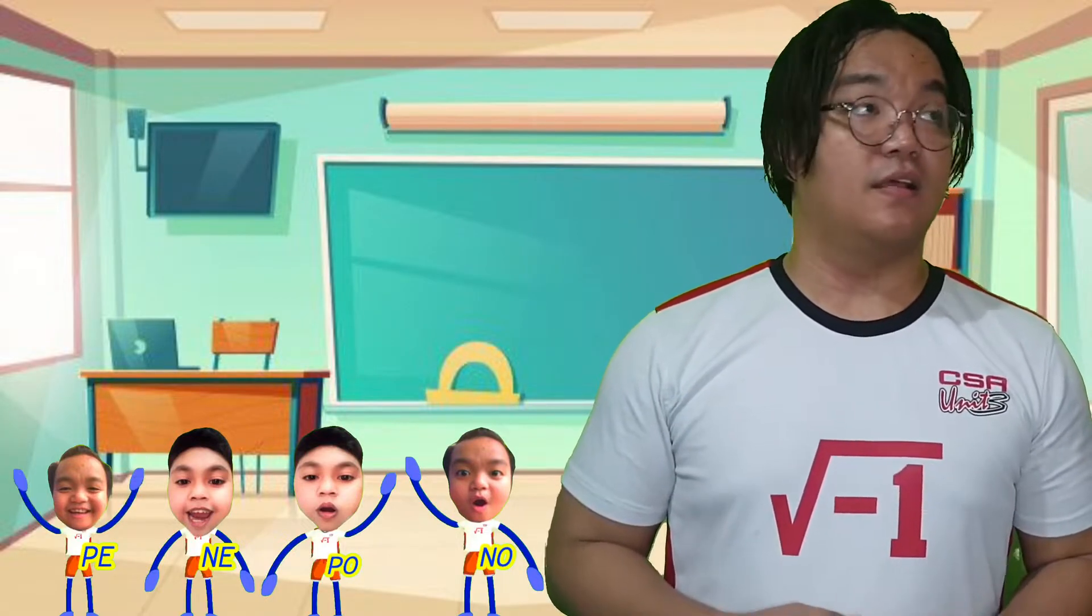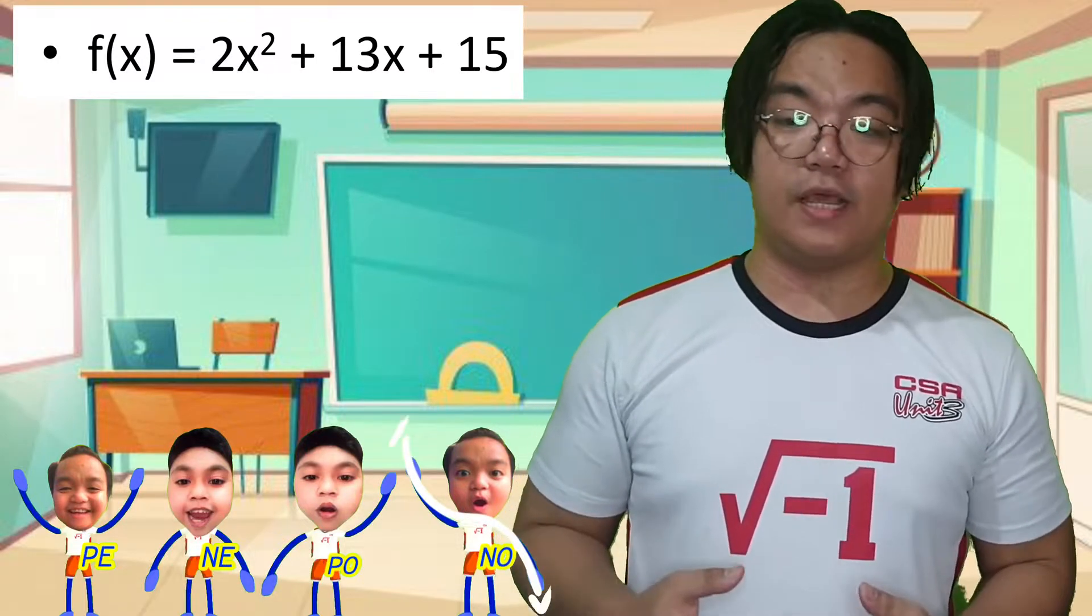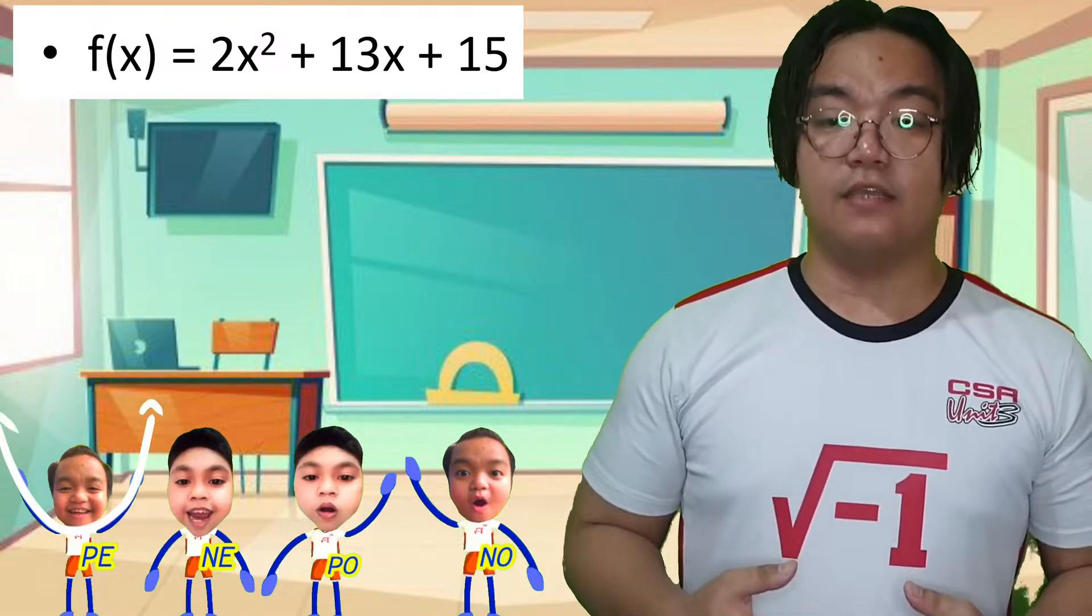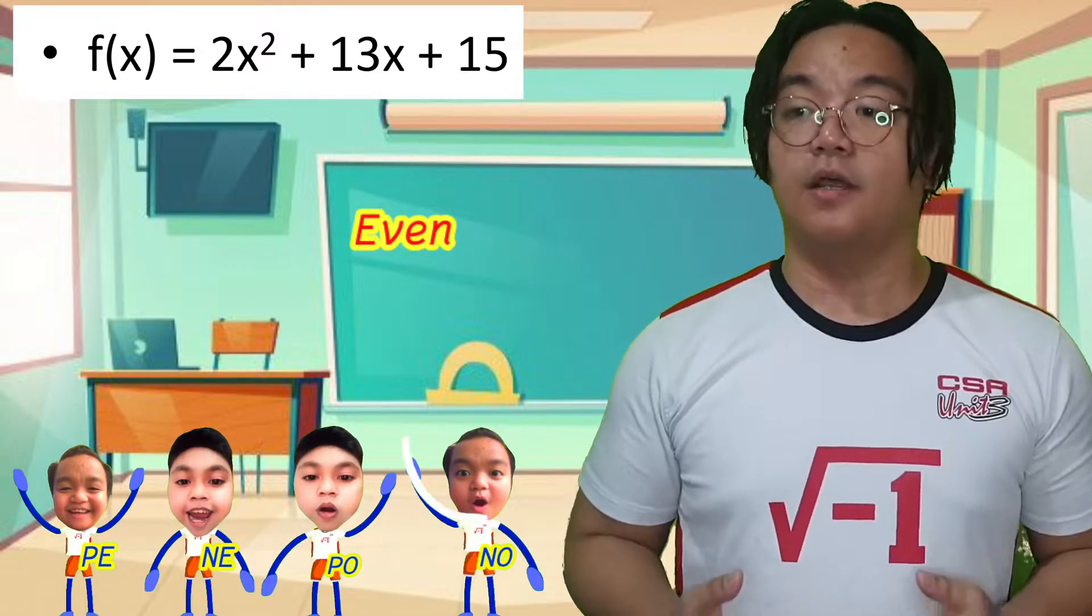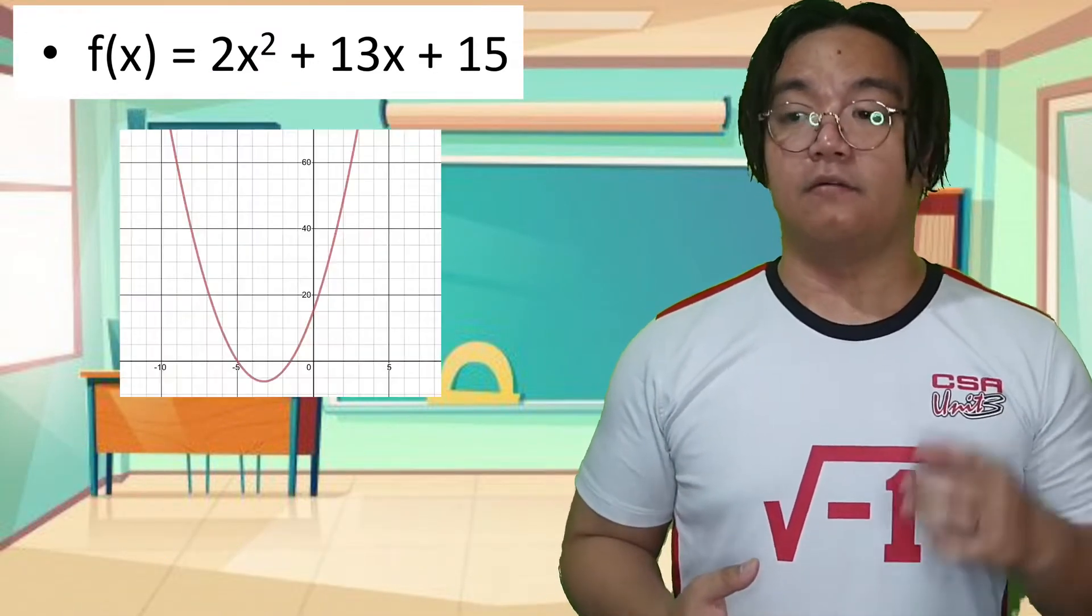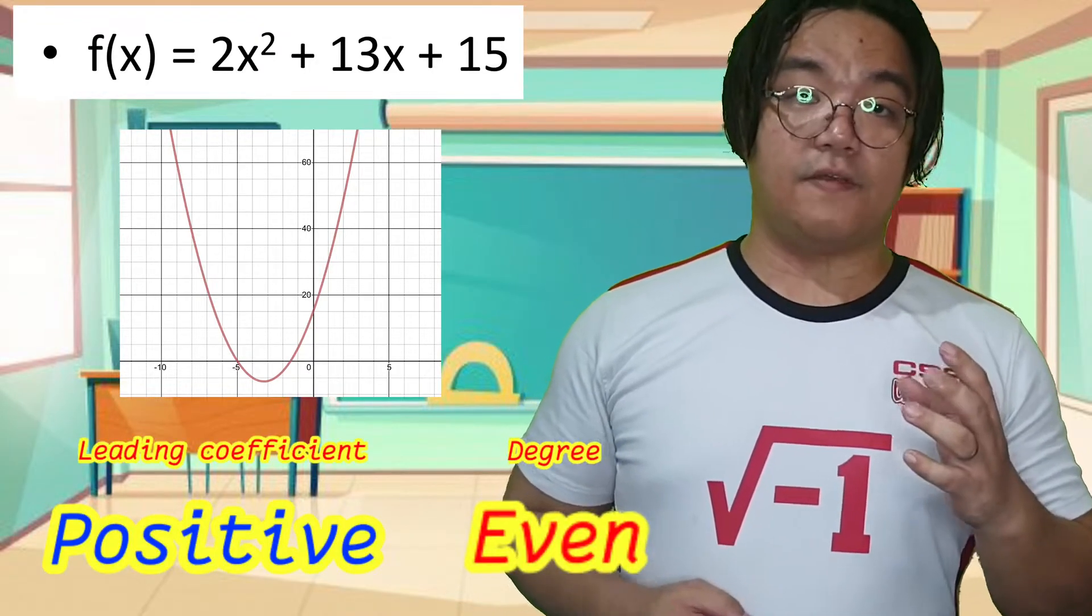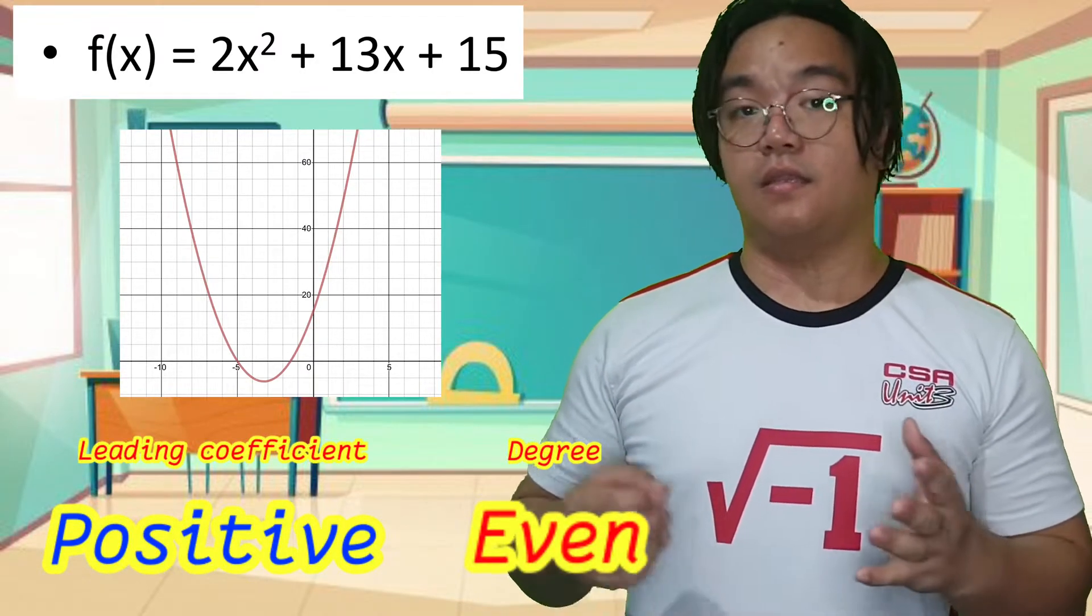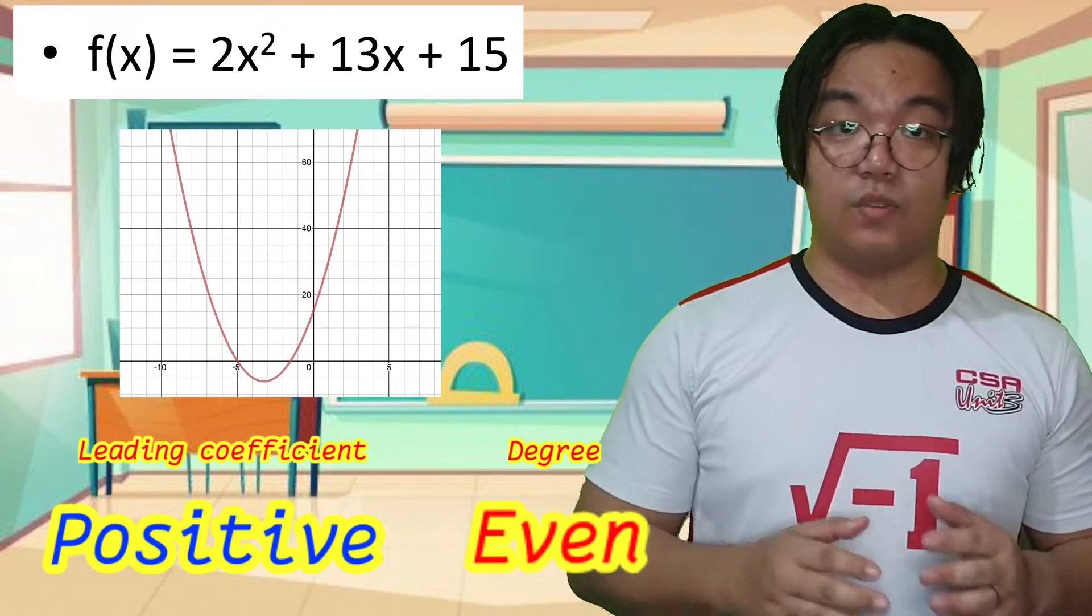For example, the polynomial function f(x) = 2x² + 13x + 15. The leading coefficient is positive 2, and its exponent is an even number. Therefore, the graph rises up on both left and right sides. The leading coefficient is positive and the exponent is even, so it falls under PE, which means positive even.